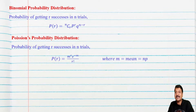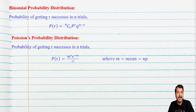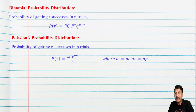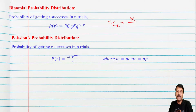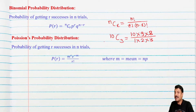The probability of getting r successes in n trials using the binomial distribution is P(r) = nCr × p^r × q^(n−r), where n is the total number of trials, p is the probability of success, and q is the probability of failure. Recall nCr = n! / (r! × (n−r)!).